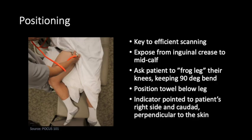To position a patient for this exam, expose the patient from the inguinal crease to the mid-calf and ask them to bend their knee out to the side — kind of like a frog-like position. It's often helpful to roll a small towel or place a pillow under the patient's knee or thigh to help with positioning and reduce discomfort. The probe indicator marker should be oriented towards the patient's right side, parallel to the inguinal crease, intending to catch the vessels transversally.